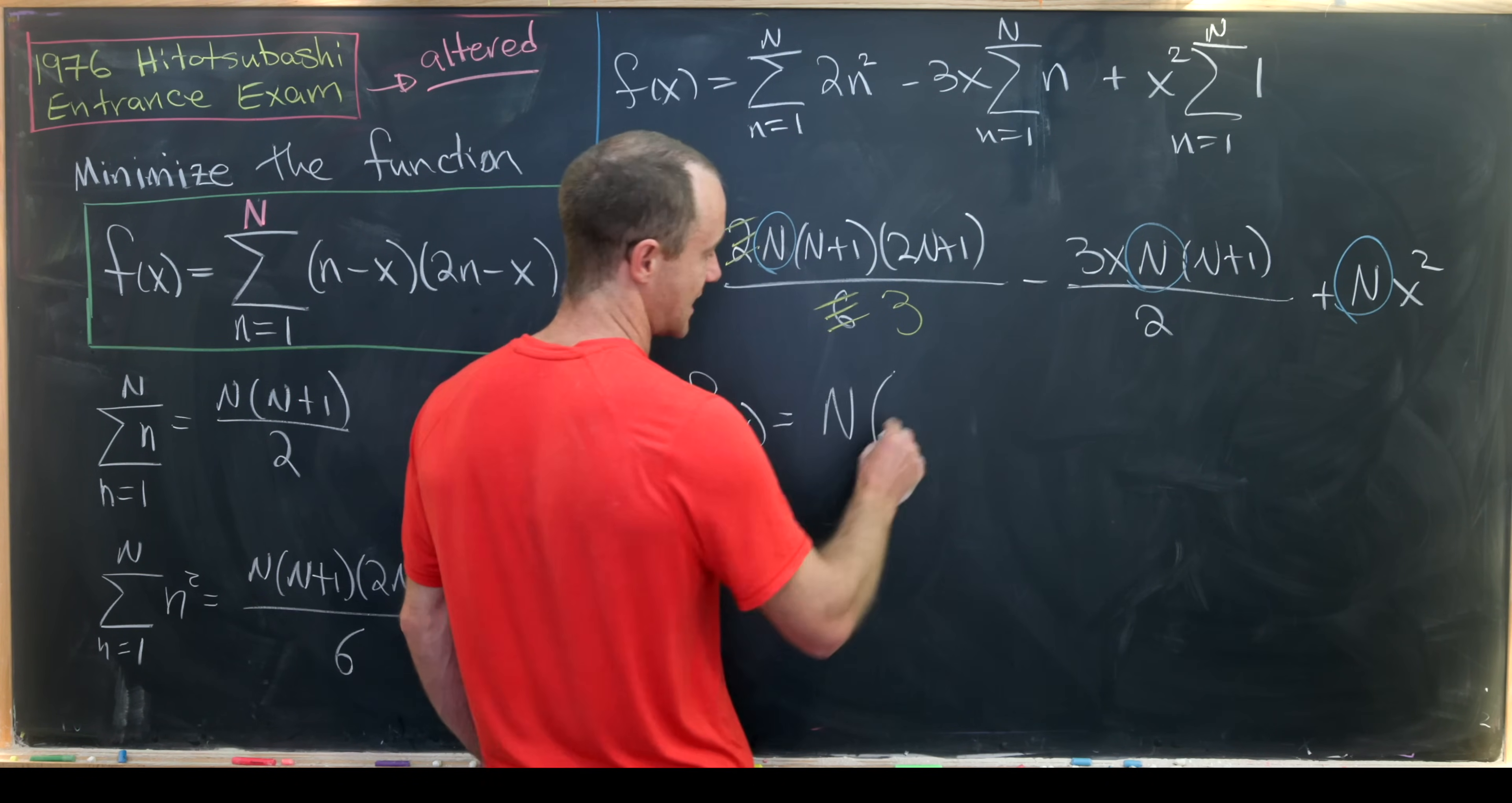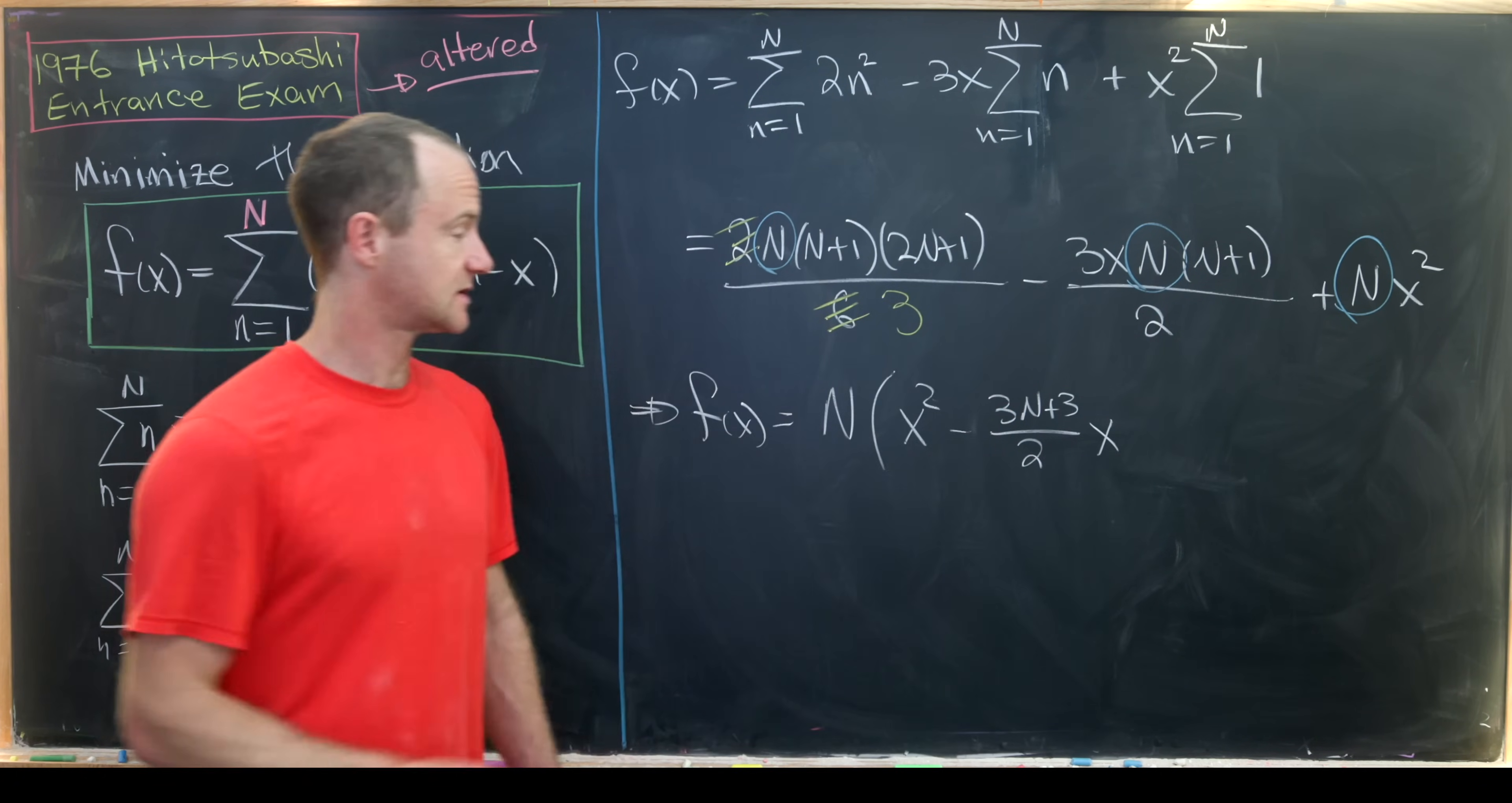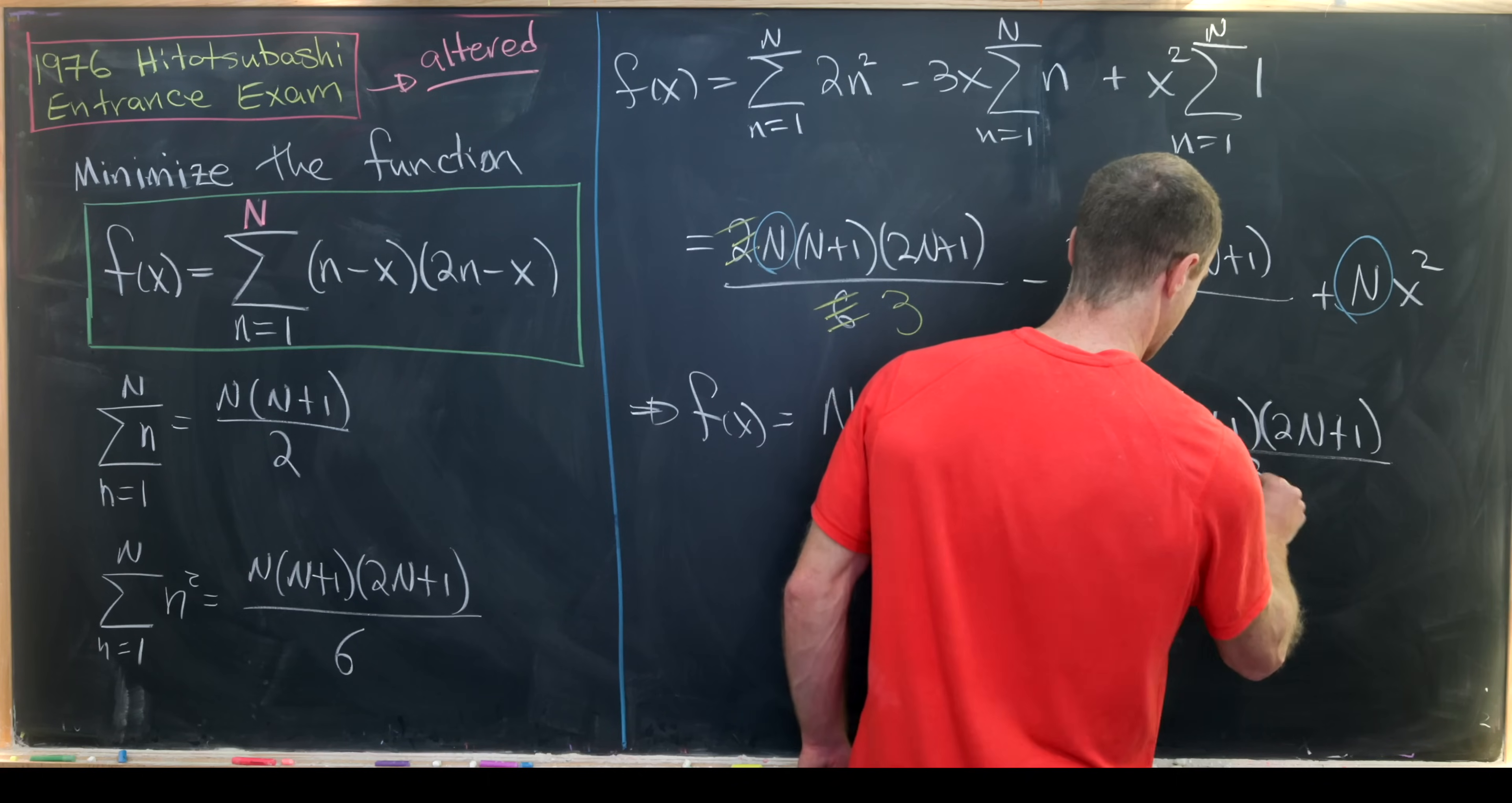So f(x) has the following form. We'll factor that capital N out and then we have x² minus 3(N+1)/2 times x and then plus (N+1)(2N+1)/3.